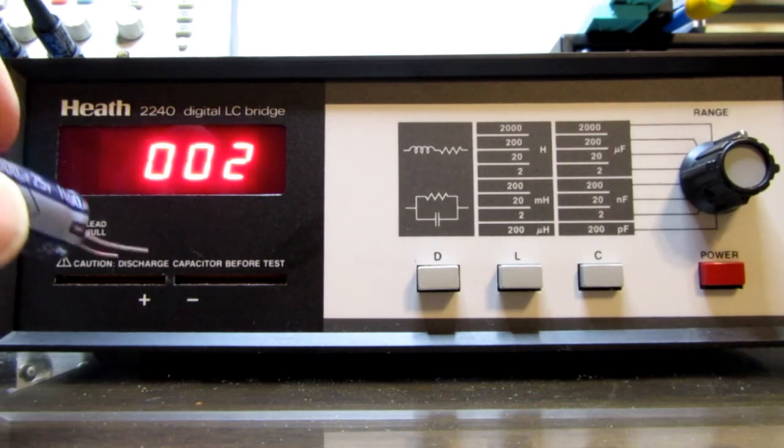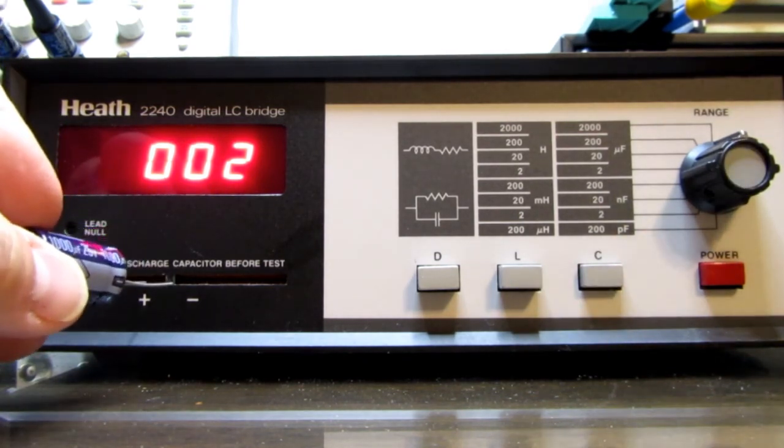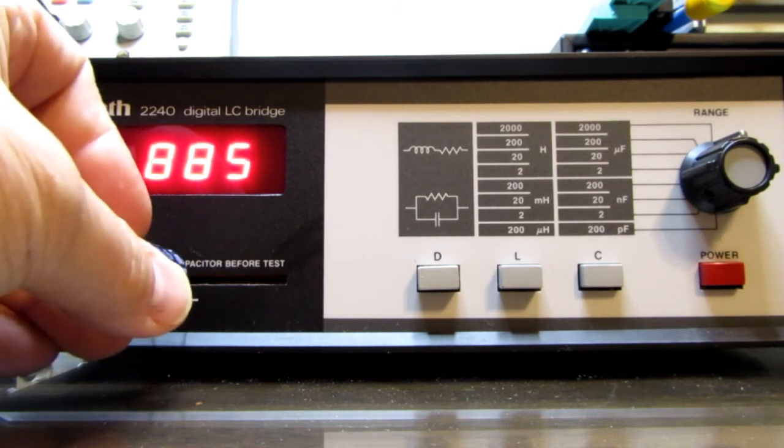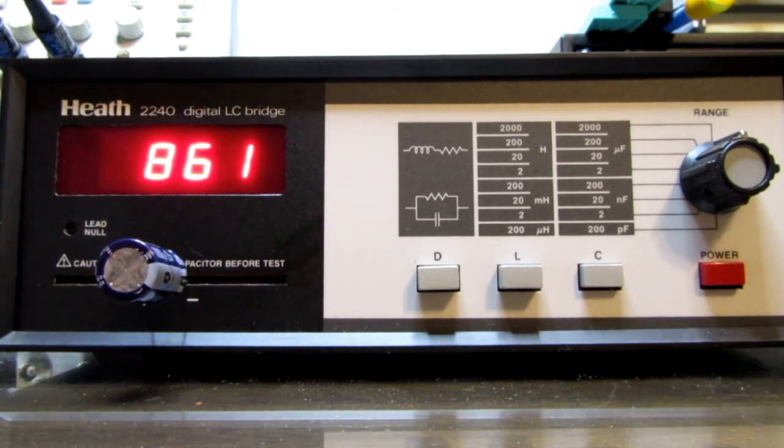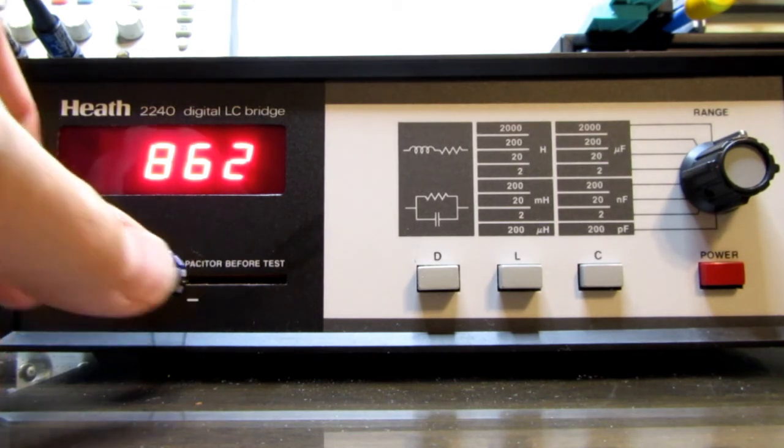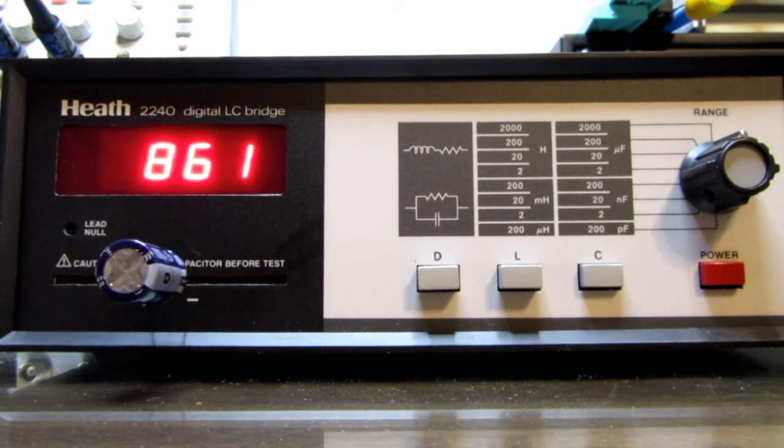This is a 1,000 microfarad part, so I've got it on the 2,000 microfarad range. And this was, it's reading 861 microfarads. And this part was originally listed as being 901 microfarads from Heathkit.